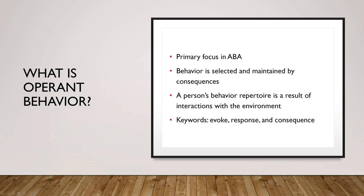Starting with operant behavior — what is operant behavior? Firstly, it is the primary focus in ABA. As an RBT, as a BCBA, as a practitioner of applied behavior analysis, we are focused on operant behavior: how do antecedents and consequences impact our behavior? Behavior is selected and maintained by consequences, meaning consequences will increase or decrease future behavior. Overall, a person's behavior is a result of interactions with the environment. An antecedent happens before the behavior. After an antecedent, a response occurs. Following a response is a consequence, and the consequence is going to dictate whether or not that behavior happens more or less in the future.